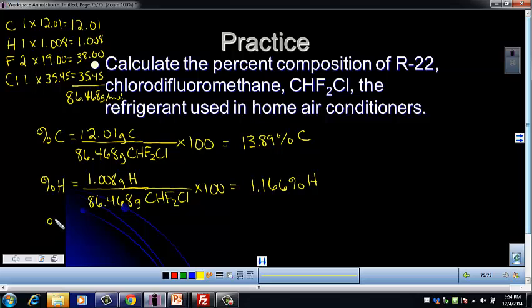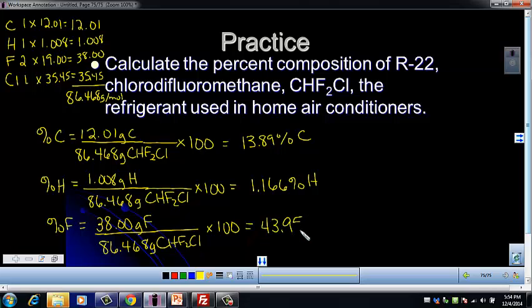And then for our percent fluorine, we're going to use our mass of fluorine from our compound. So not just the molar mass of one fluorine, but there are two there. So we're going to use 38.00 grams of fluorine. And that's going to be divided by our same molar mass there, 86.468 grams of CHF2Cl. I'm going to multiply by 100. And that gives us 43.95% fluorine. I'm going to come over here to do chlorine because I don't think it will fit.